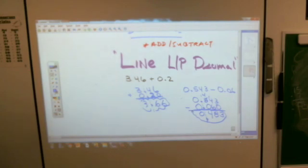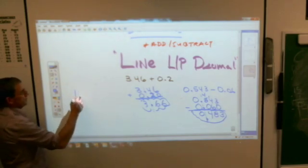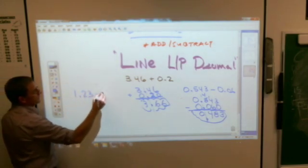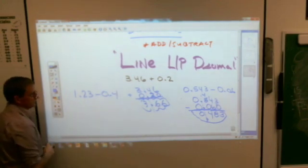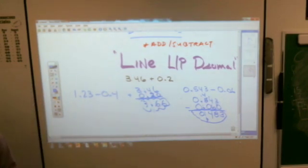Let me give you one to try. Again, this is fairly difficult here. How about 1.23 minus 0.4? Do that one for me. Where do you sit? As you're sitting. Do that one for me.